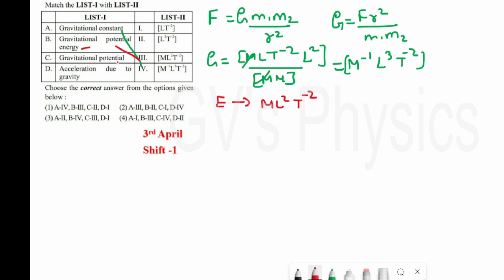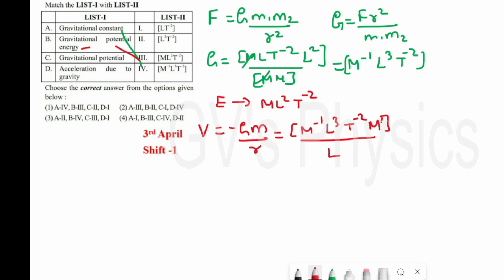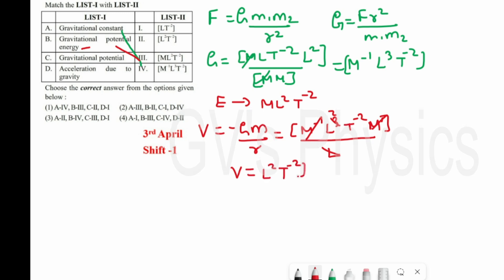Next one is gravitational potential. Using the formula V = −GM/r, we substitute the dimension of G (M⁻¹L³T⁻²), multiply by M, and divide by L. The M terms cancel, and L³/L gives L². So gravitational potential V = L²T⁻². Gravitational potential C matches with 2.